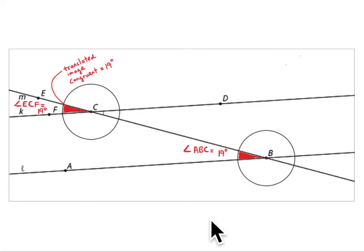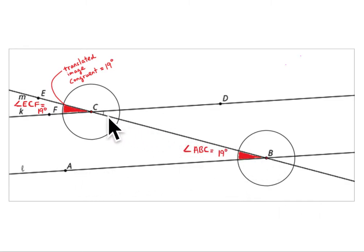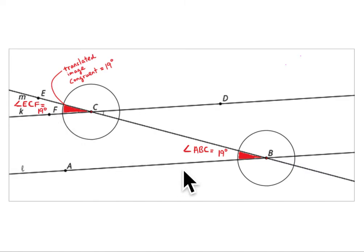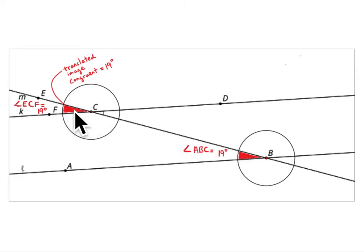Problem two gives you the size of angle ABC as 19 degrees and asks you to explain why the measure of angle ECF is also 19 degrees. Think about translation — if we translate, or just move, this figure over, it maps onto the other figure. So this angle is going to be equal to that angle, making it 19 degrees.